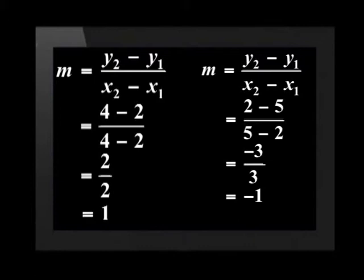I'm going to find the product of the gradients of these two lines: 1 times negative 1, which is negative 1. This answer of negative 1 is the same for any two lines on the Cartesian plane that are perpendicular to each other. But you've always told me to check with more than one example, so can we look at other perpendicular lines?